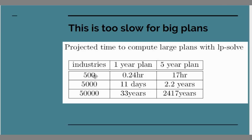So 500 industries using those timings, I could do a one-year plan in a quarter of an hour, that's still okay. 17 hours for a five-year plan, well that would not be unreasonable for a government ministry planning and doing a macroeconomic plan of the economy. They could easily afford to spend a day computing it.